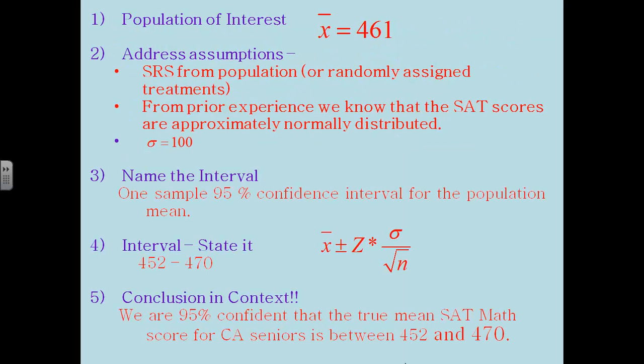So here's how we're going to do this. We're going to set this up the same way we did in the last section. We're going to write it out using PANIC. Population of interest is x bar, which is the sample mean. So in this sample was 461. We need to address our assumptions. We were given that this is a simple random sample from the population. From prior experience we should know that SAT scores are approximately normally distributed. That's just usually pretty much all standardized tests - the scores wind up being approximately normal. And in this case they told us the population standard deviation is 100.